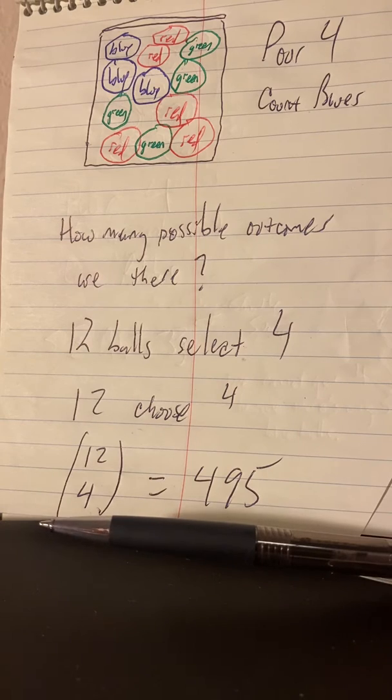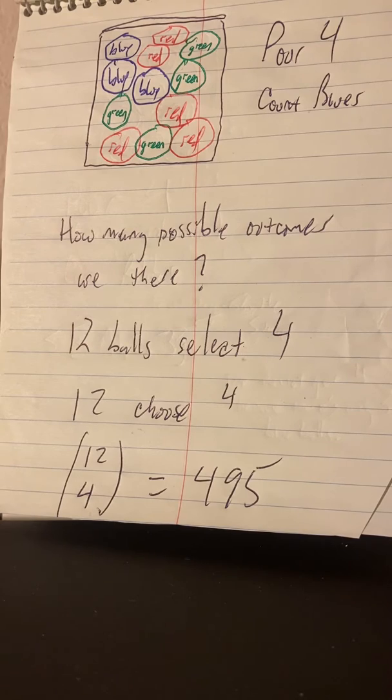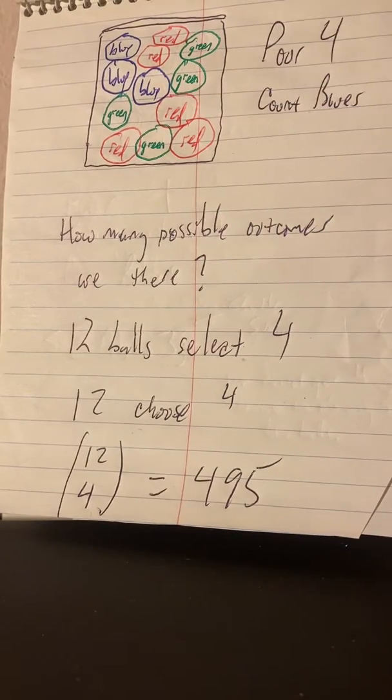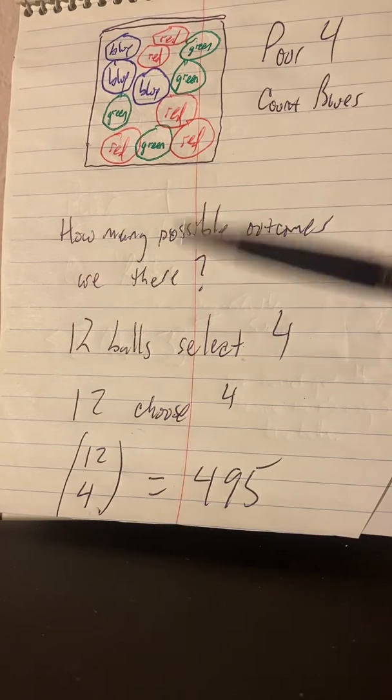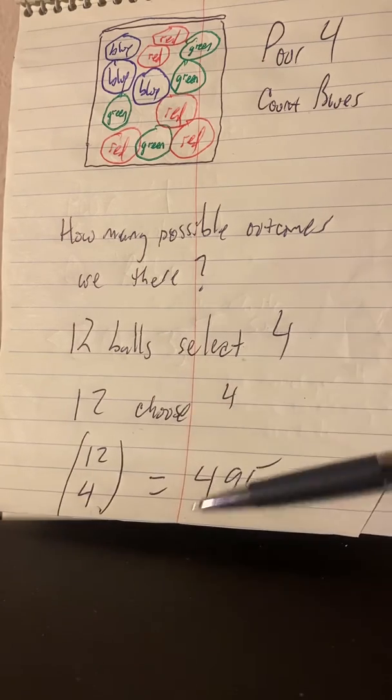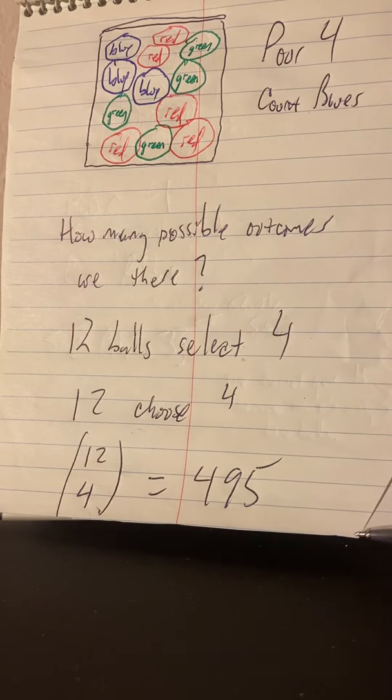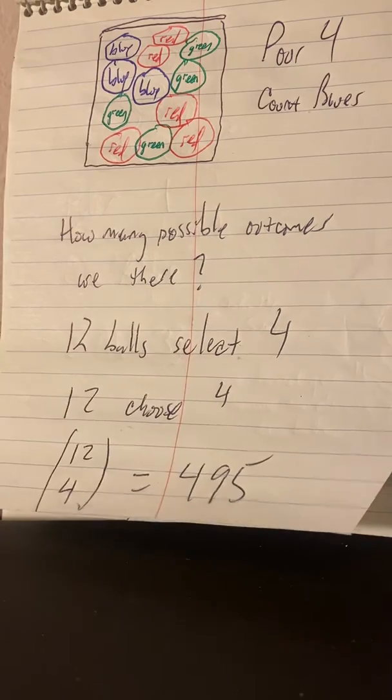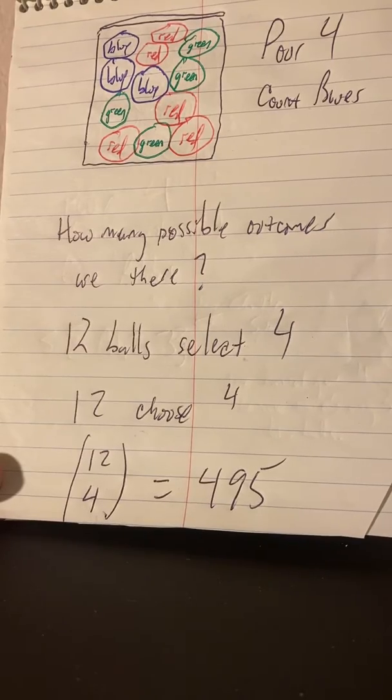We're going to think about how many different possible outcomes there are so we would know the size of an actual symmetric sample space if we were to build one. How many possible outcomes are there if we have 12 balls in the urn and we're pouring out four? Well, we're selecting four from 12. So that's a 12 choose 4 problem. 12 choose 4 off Pascal's triangle is 495, or you can use the formulas we developed in class. So there's 495 ways to pour or select four balls from the 12.